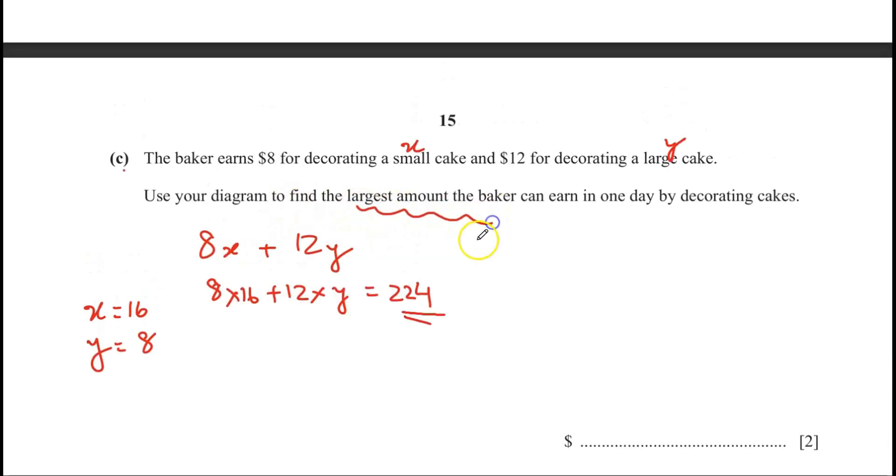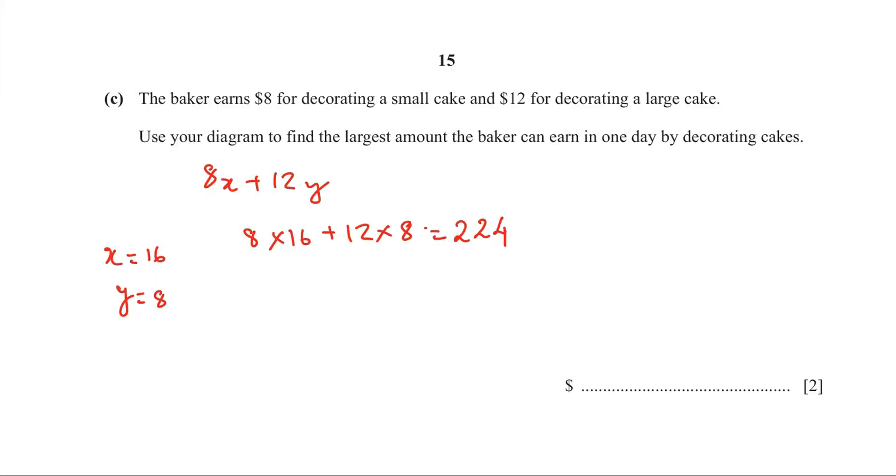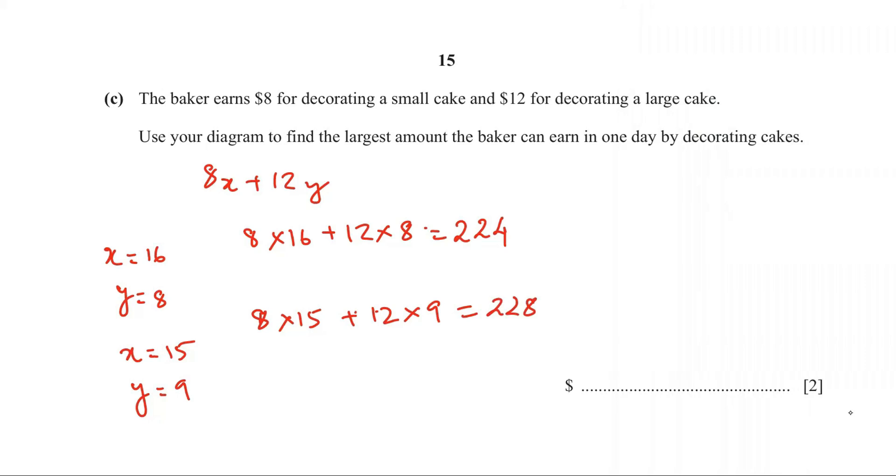Because we need to find the largest amount. Here I took the value of x to be 16, the largest. But if I go to 15, I can increase my value of y to 9. Remember the point actually crosses over here at 9. Because I drew this freehand, it's not exactly looking like 9. So let's try and see. So this time x equal to 15 and y equal to 9. So 8 times 15 plus 12 times 9. And this is equal to 228. 228 and obviously your answer is 228.